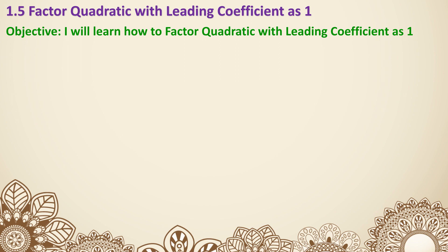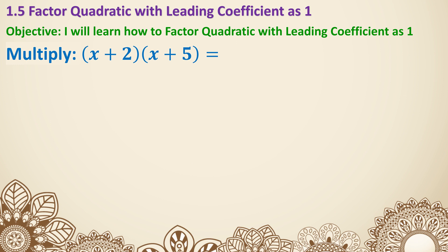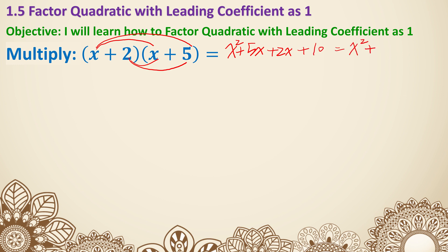We have all learned how to multiply already, so here's what we're going to do. We're going to multiply x plus 2 times x plus 5. You can either use your string method or your box method. Using the string method, I'll get x squared plus 5x, then 2 times x and 2 times 5, so I'll get 2x and 10. That simplifies to be x squared plus 7x plus 10.